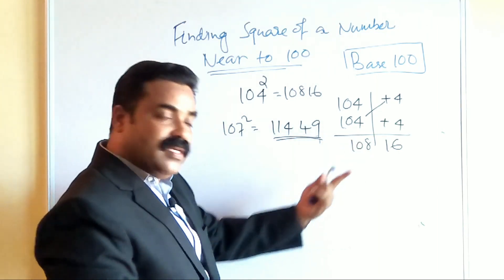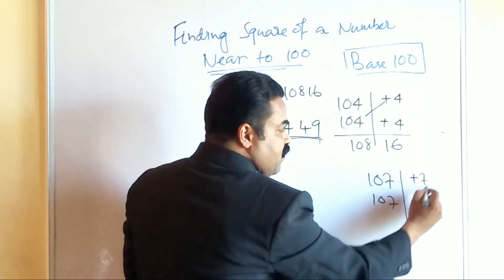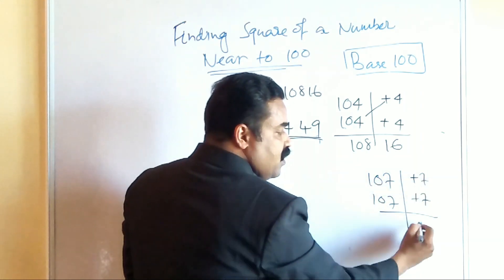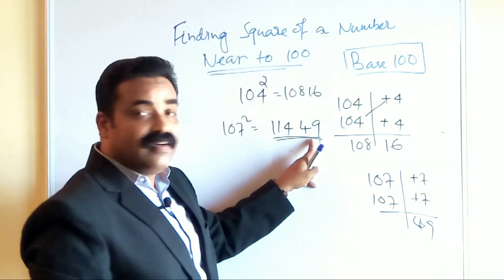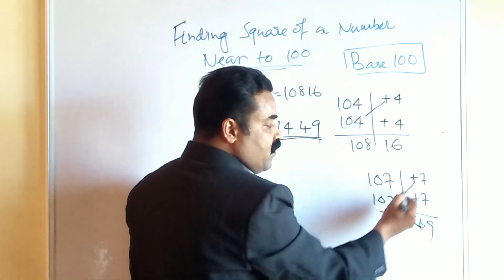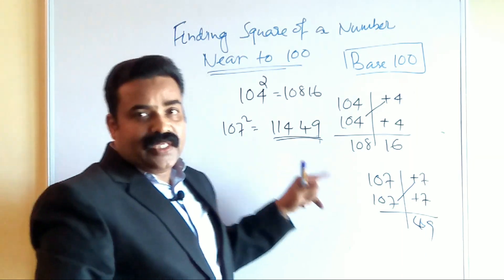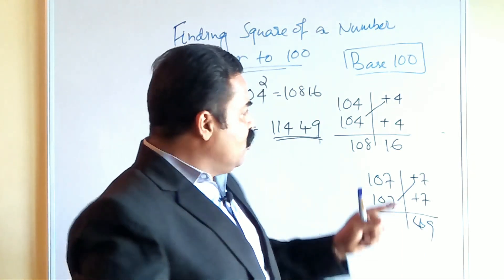If I do it using this method, the same answer will come. 107, 107. So what is the deviation? Plus 7, plus 7. 7 times 7 is 49, that I have written here first. Then when I do the cross addition, 107 plus 7, I will get 114. So I can do directly also. So I am sure you might have learned it. Without doing this, directly by seeing, by observation method, even you can write the answer.